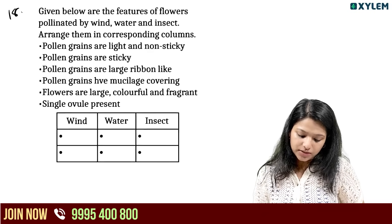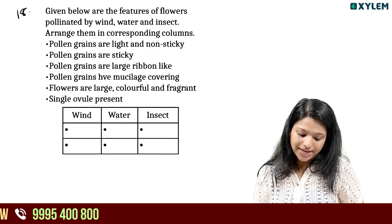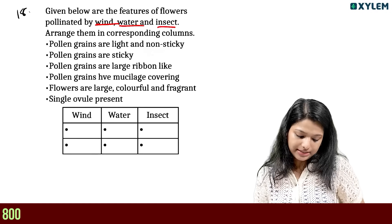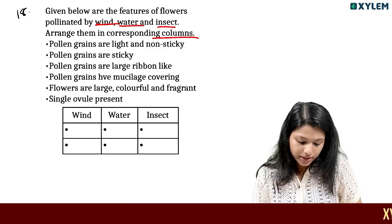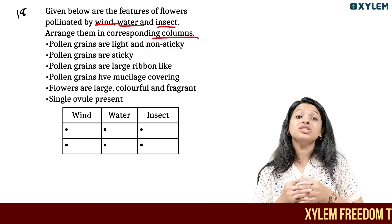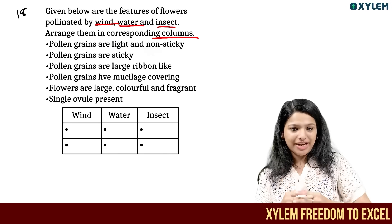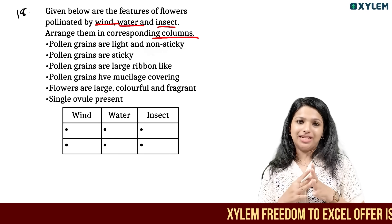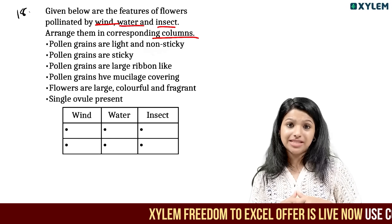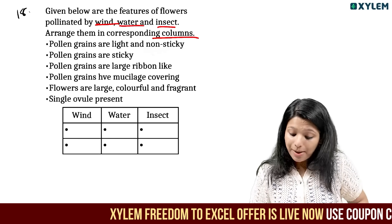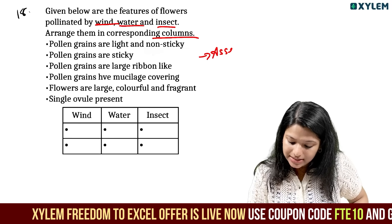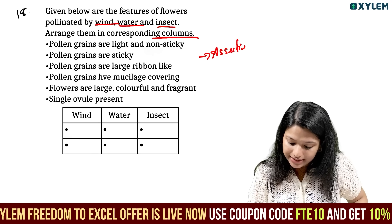The features of flowers pollinated by wind, water, and insects are given below. Arrange them in the corresponding columns. If you look at this, you will see an assertion-reason type of question.